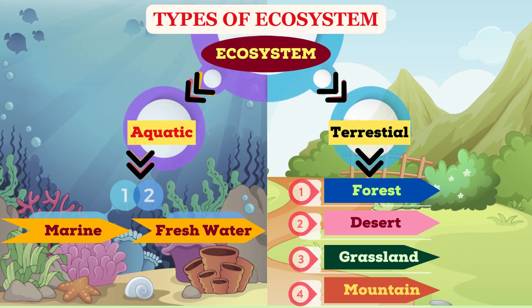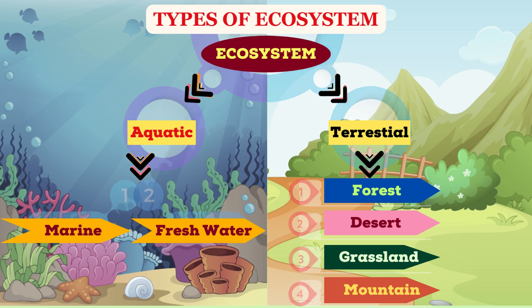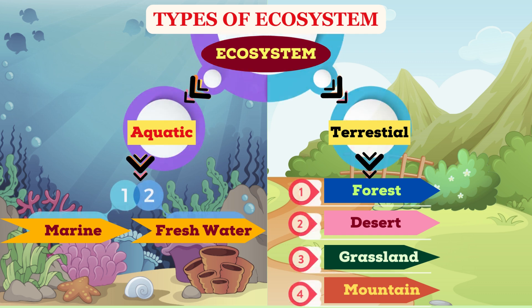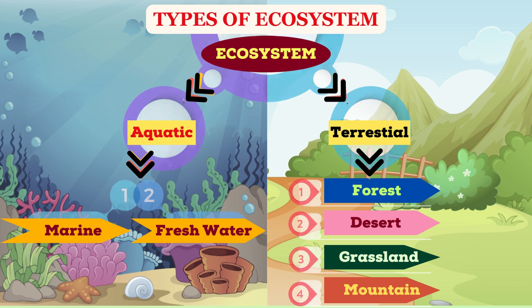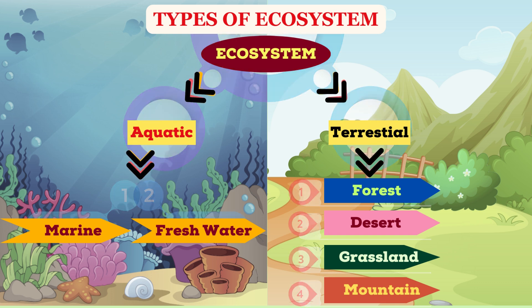Types of ecosystem: ecosystems are basically divided into aquatic ecosystem and terrestrial ecosystem. Marine ecosystem and freshwater ecosystem fall under the aquatic ecosystem, whereas the terrestrial ecosystem consists of forest ecosystem, desert ecosystem, grassland ecosystem and mountain ecosystem.